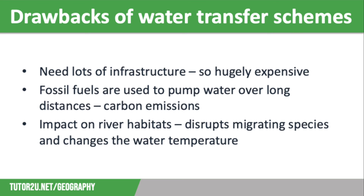However, there are lots of drawbacks of large-scale water transfer schemes. One reason for opposition is the cost — they are hugely expensive as they require so much infrastructure to pipe water across the country. Another reason is the use of fossil fuels to generate the power to pump water over large distances, meaning that these schemes have a large carbon footprint. Lastly, each scheme will have a big impact on existing river habitats. They usually involve building a dam to create a reservoir, which can block migrating species. The reservoir will also be much deeper than the original river, affecting the ecology as water temperatures drop and marine wildlife may struggle to cope.